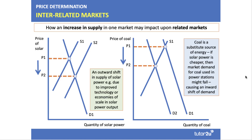Very important in your micro paper: if you get a question on this, think about interrelated markets — how a change in supply and demand in one market can impact on a related market. On the left here, an outward shift in the supply of solar renewable energy, perhaps due to better battery technology or economies of scale, brings the price of solar down from P1 to P2. One consequence of that is on the right hand side: an inward shift in the market demand for coal — an interrelated market — as people shift away from coal-fired energy towards renewable solar power. If you get an interrelated markets question, use one of these double diagrams to show the connections clearly.